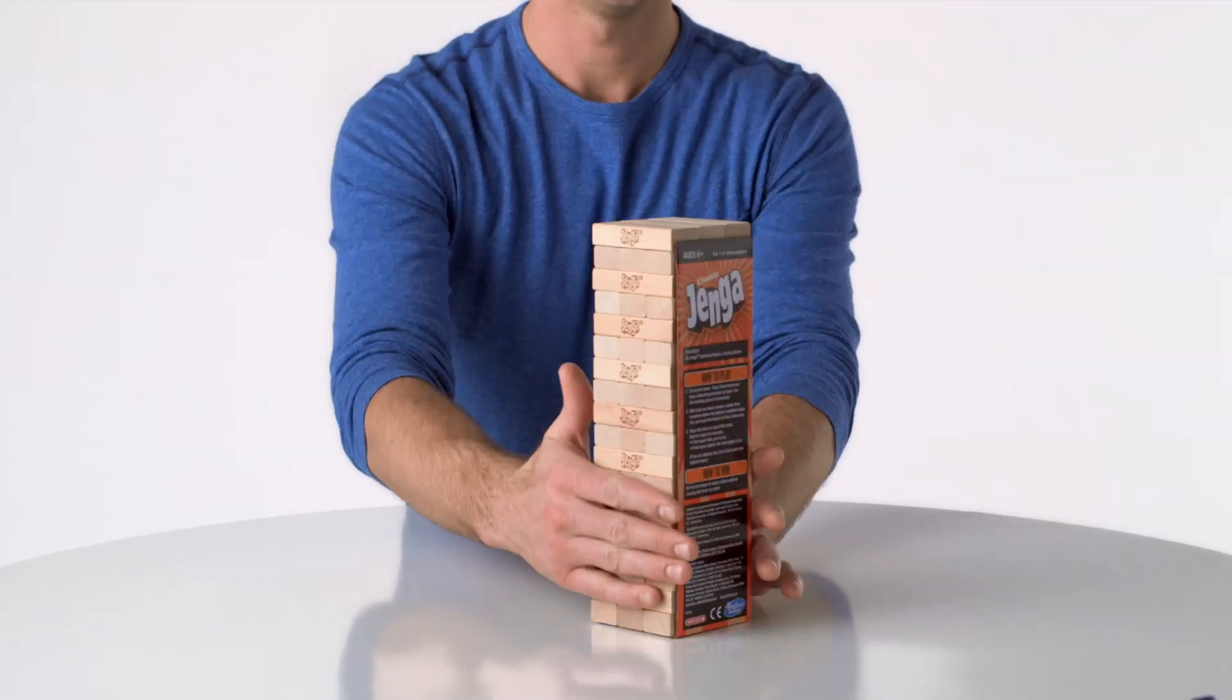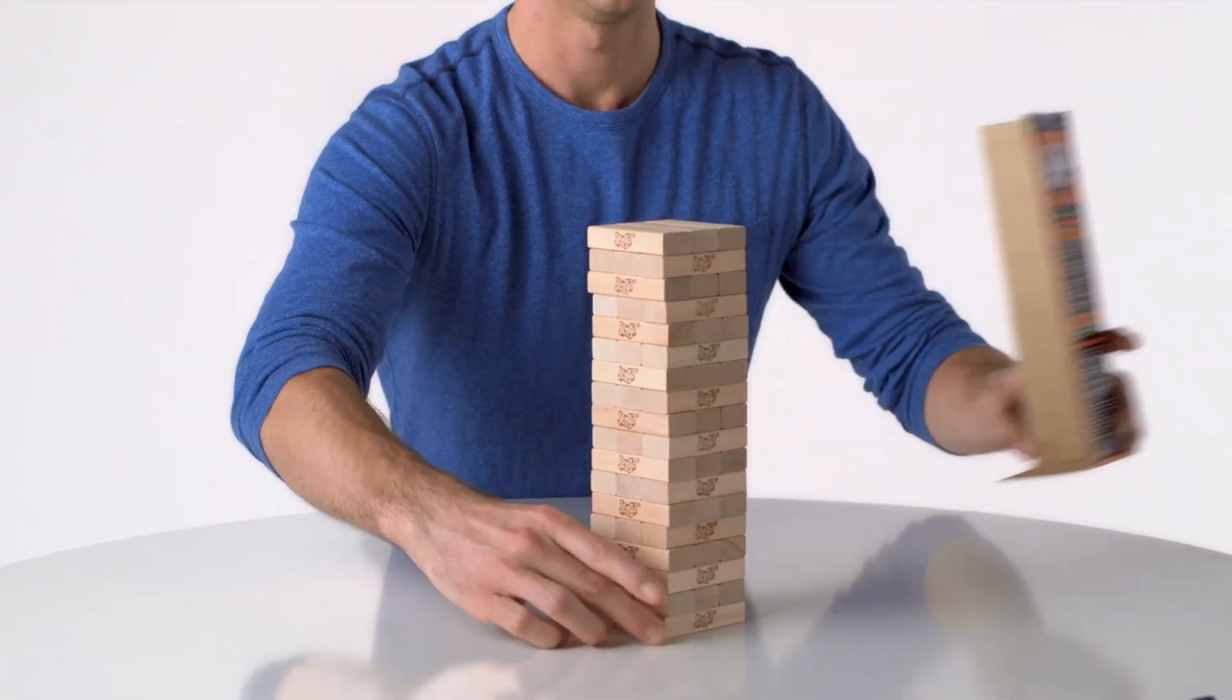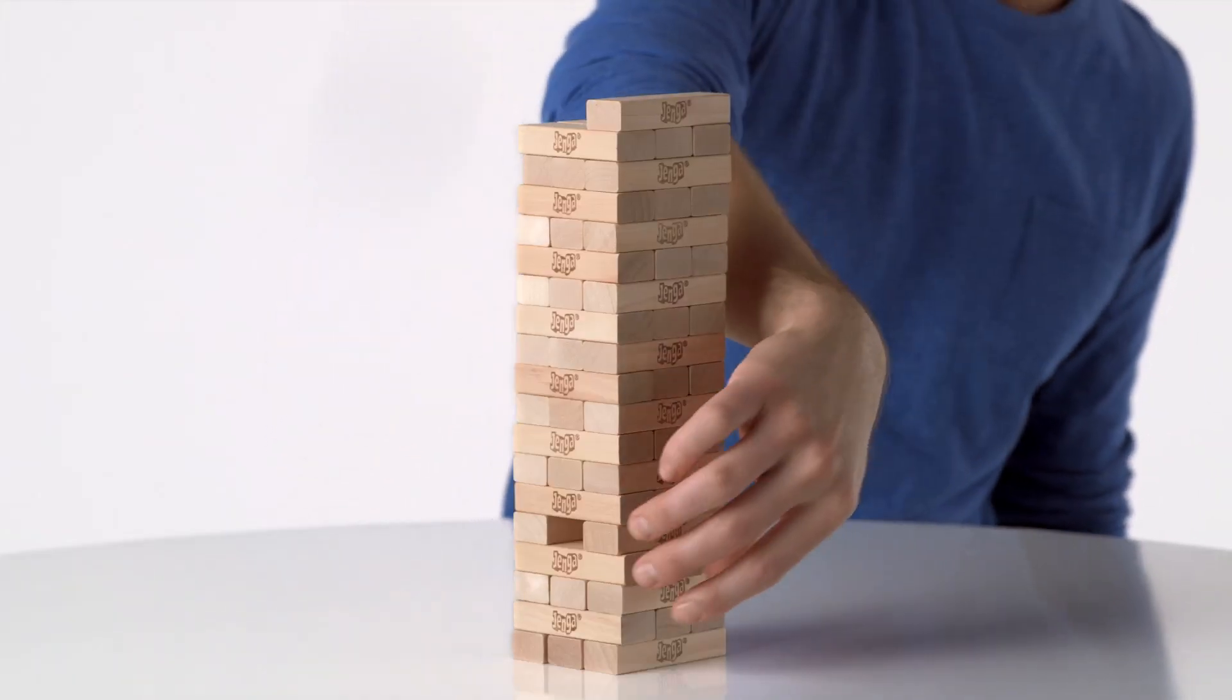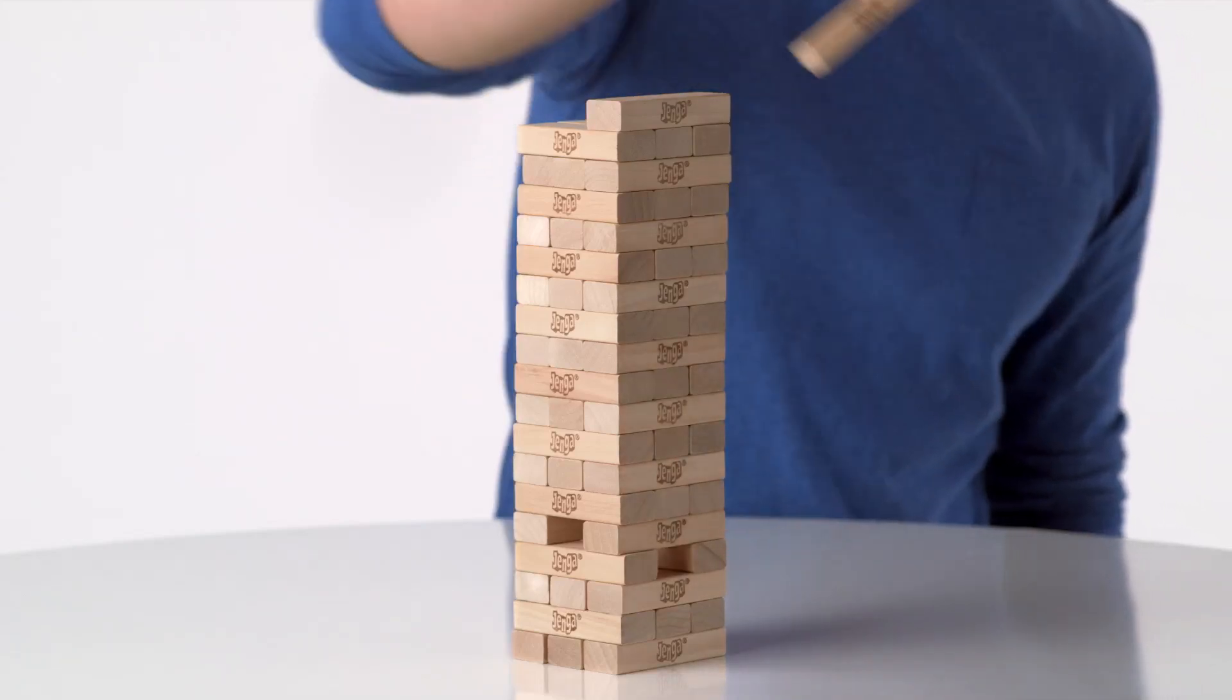Use the stacking sleeve to build the tower and using only one hand carefully remove a block from anywhere beneath the highest completed level and then stack it on top.